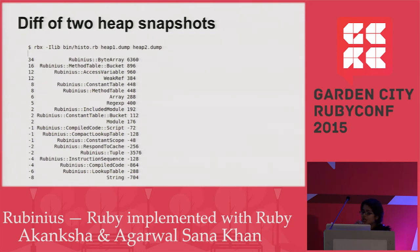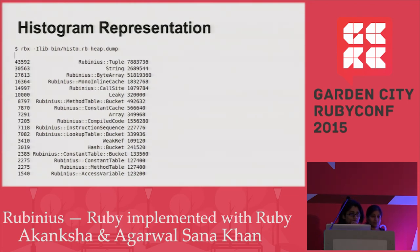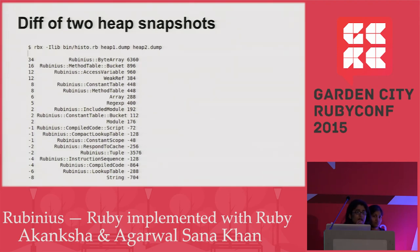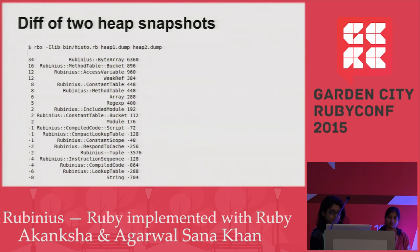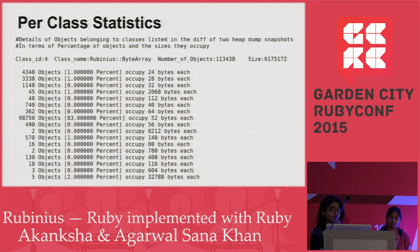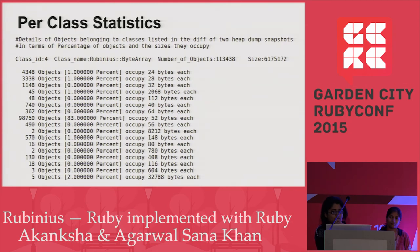A single heap dump isn't sufficient to figure out where a memory leak might be occurring. So we take two heap snapshots and across those two snapshots we list the classes in which the number of objects are either increasing or decreasing. Here we can see that in the case of byte array, the count has increased. From here we can further drill down and see per-class statistics — for example, looking inside the byte array class to see what percentage of objects are occupying how many bytes. In this case, five objects, around 2%, are each occupying an unusual number of bytes, which warrants further investigation.